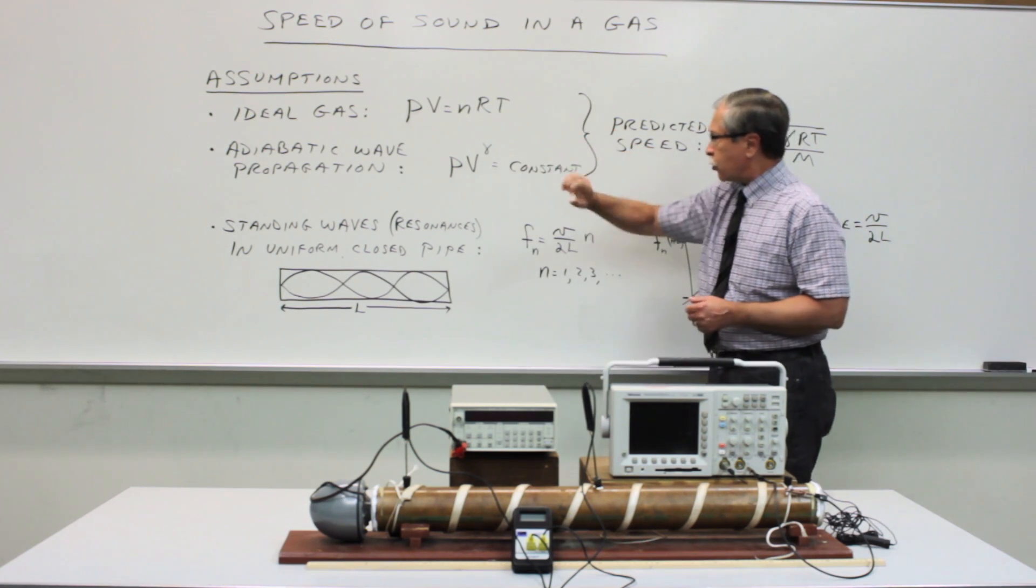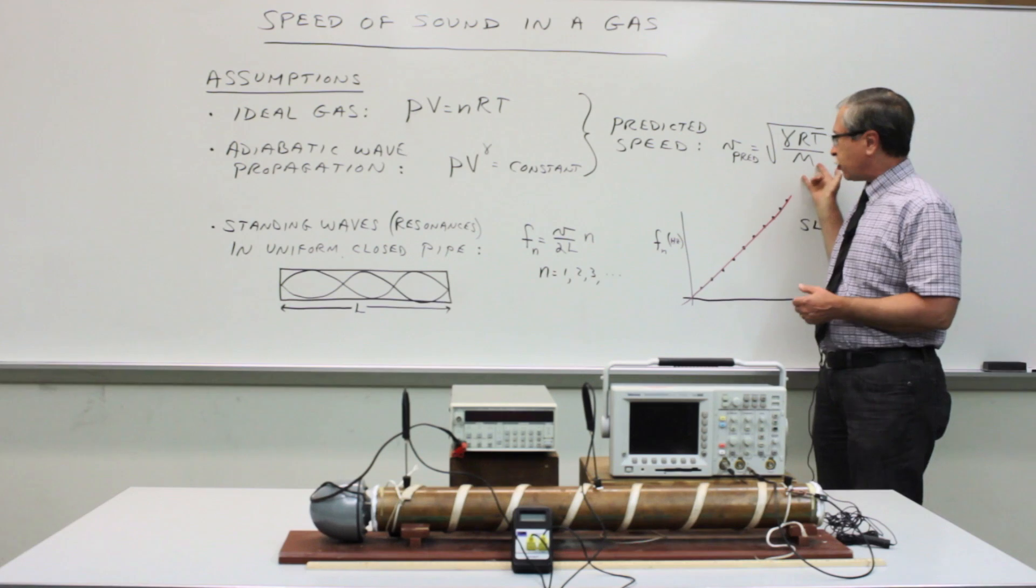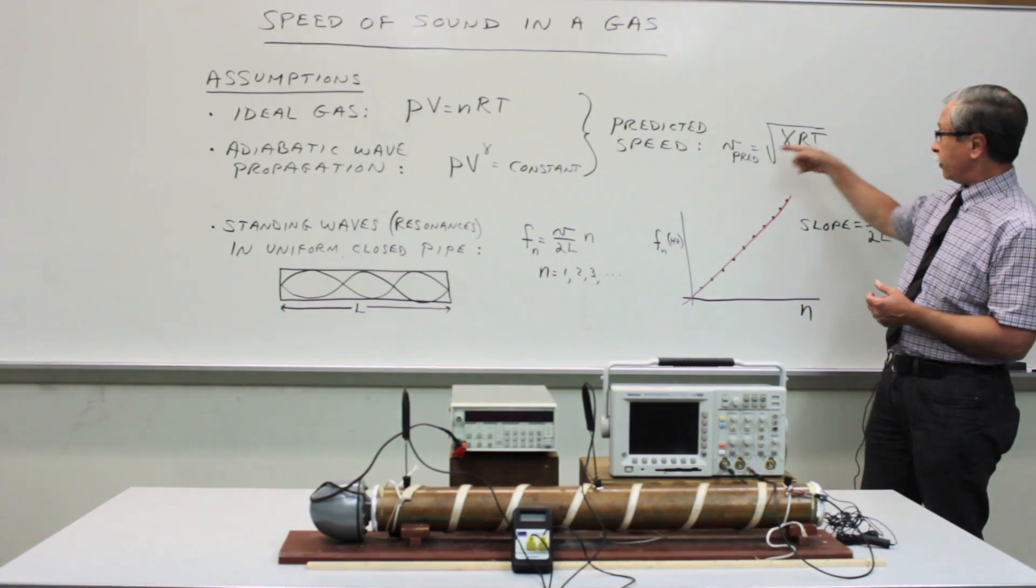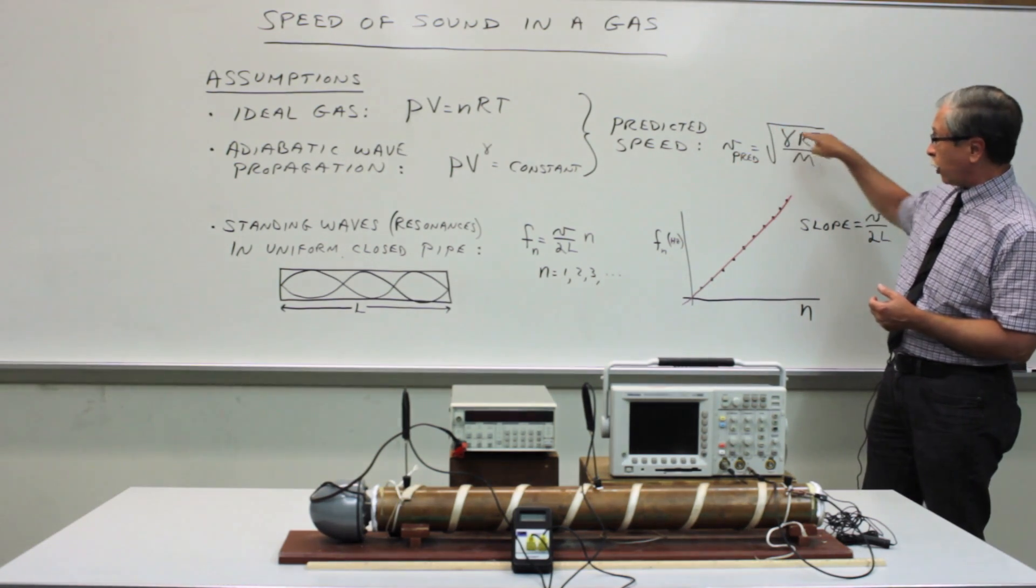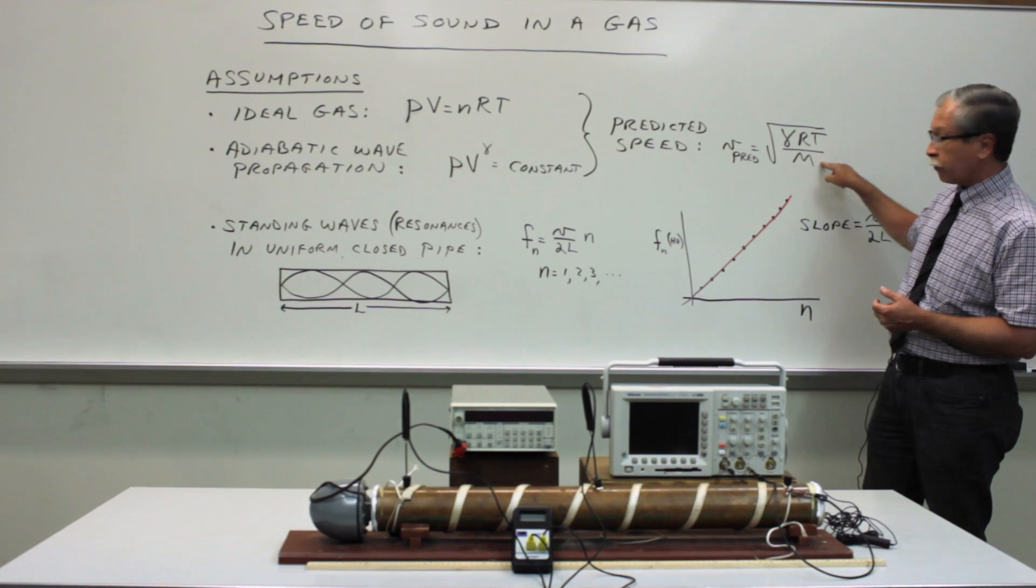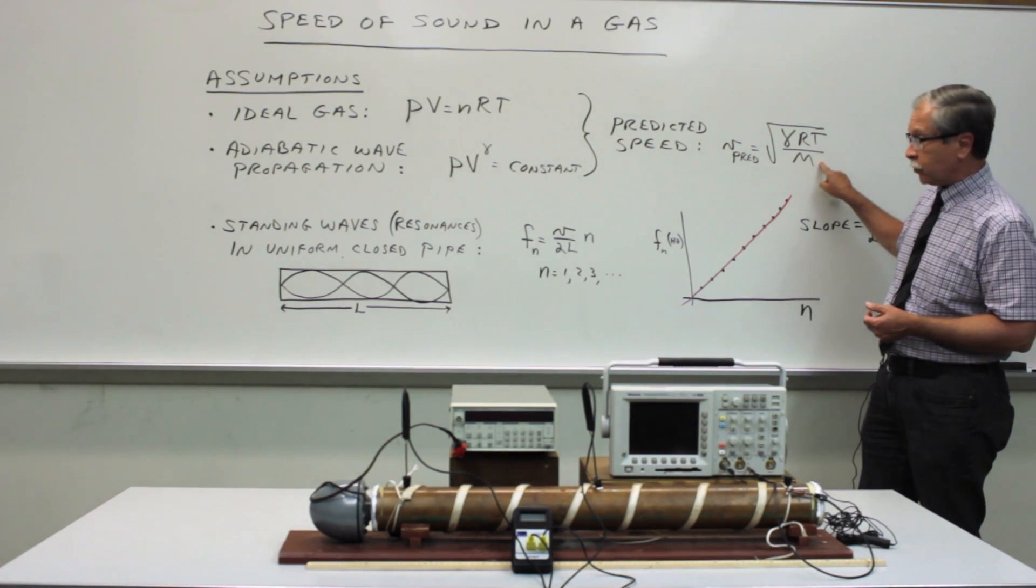So from these two assumptions, we get a prediction for the speed of sound, namely the speed is the square root of gamma RT over M, where M is the molar mass of the gas.